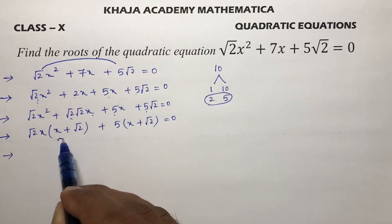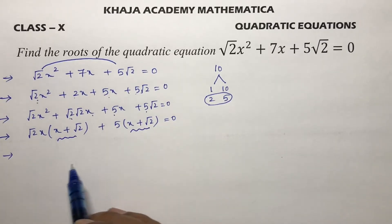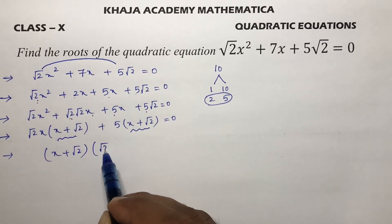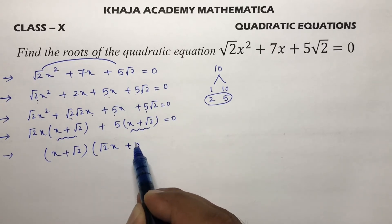Now, x + √2, x + √2 I'll take common. So here √2x + 5.